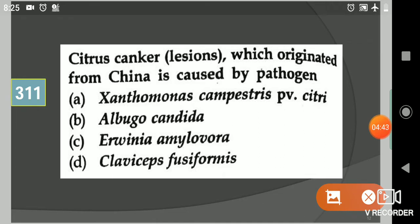Next question: Citrus canker or lesions which originated from China is caused by pathogen? Your options are Xanthomonas campestris pv. citri, Albugo candida, Erwinia amylovora, or Claviceps fusiformis. Your answer is Xanthomonas campestris pv. citri. Remember this: here pv. citri for citrus. If rice will be there, then it will be oryzae.